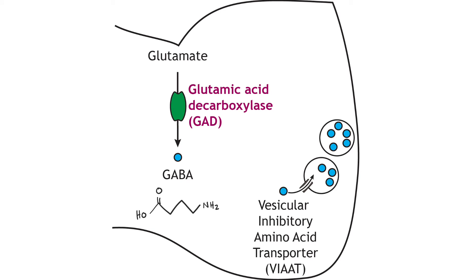Glutamate is used to synthesize GABA, another amino acid transmitter and the primary inhibitory neurotransmitter in the brain. In the presynaptic terminal, glutamate is converted into GABA via the enzyme glutamic acid decarboxylase, which is the rate-limiting step. GABA is packaged into vesicles for storage in the terminal via the vesicular inhibitory amino acid transporter.